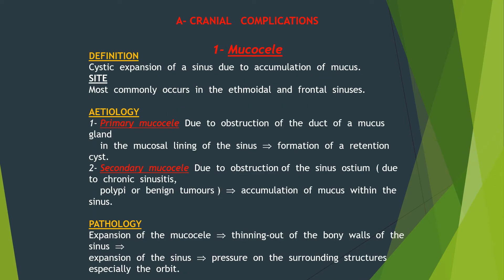Cranial complications: Mucocele is a cystic expansion of a sinus due to accumulation of mucus. It most commonly occurs in the ethmoidal and frontal sinuses. It may be a primary mucocele due to obstruction of the duct of a mucous gland in the mucosal lining of the sinus, leading to formation of a retention cyst, or secondary due to obstruction of the ostium of the sinus due to chronic sinusitis.